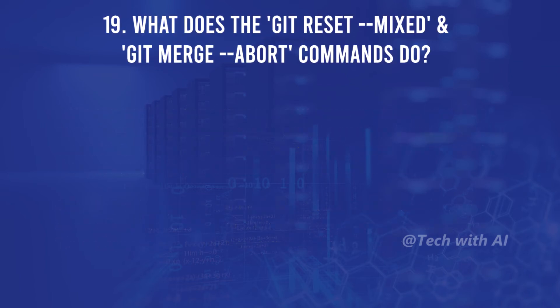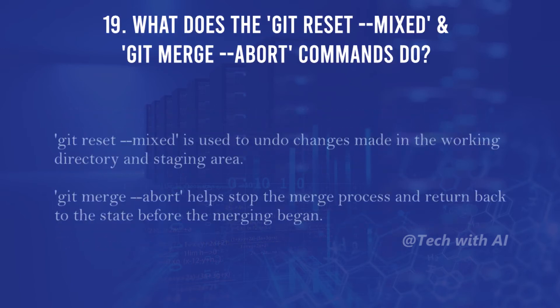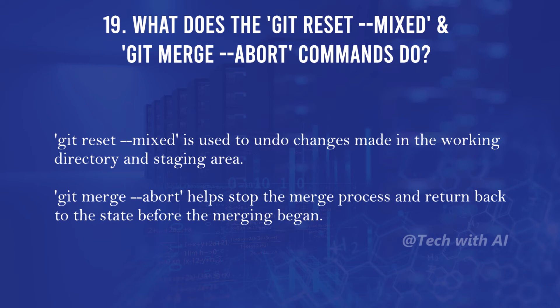What do the git reset --mixed and git merge --abort commands do? git reset --mixed is used to undo changes made in the working directory and staging area. git merge --abort helps stop the merge process and return back to the state before the merging began.